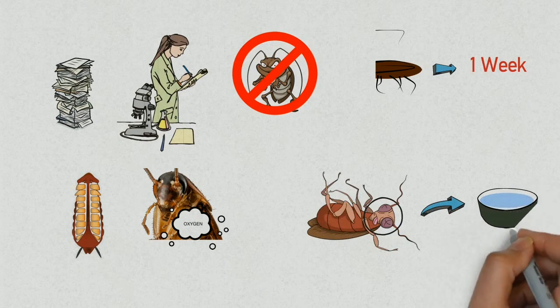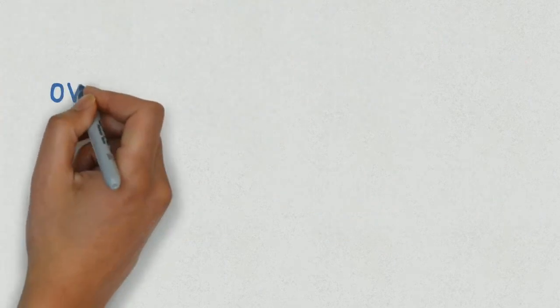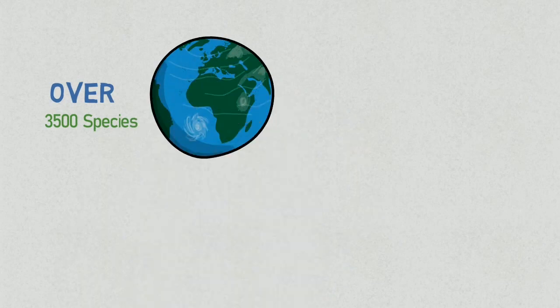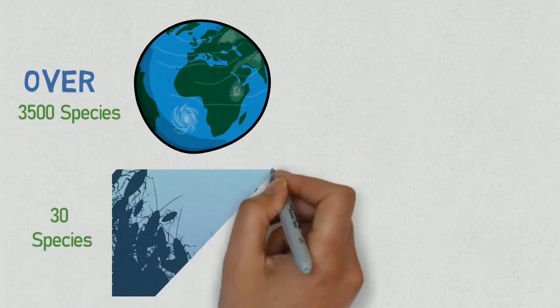Over 3500 species of cockroaches live on this planet, and 30 of them can live around us.